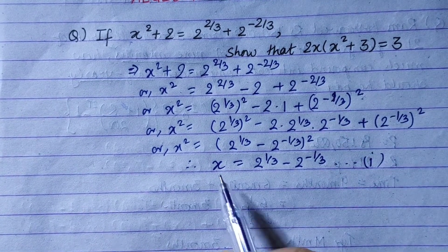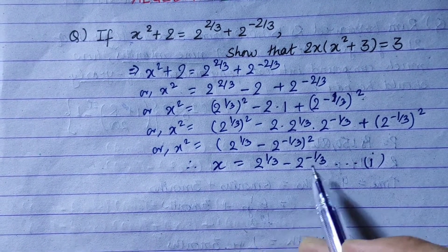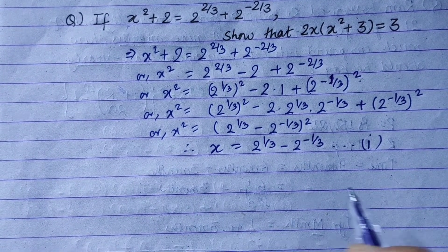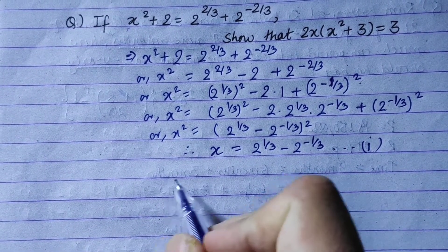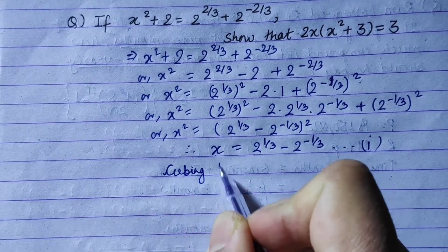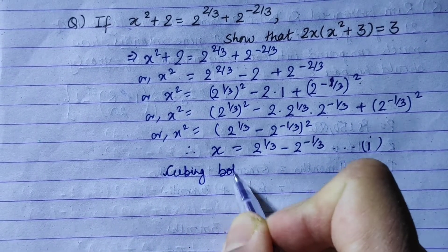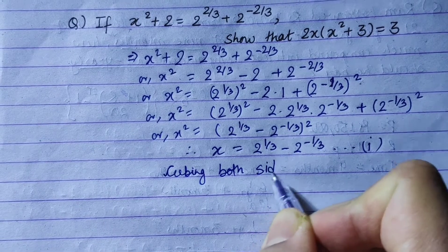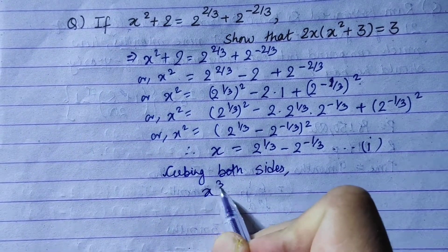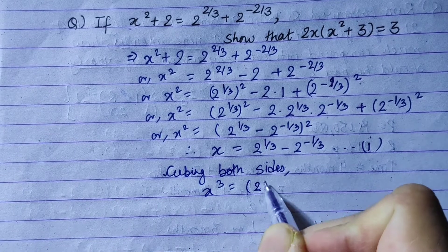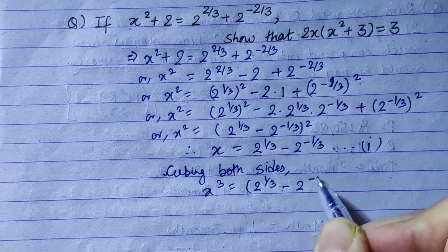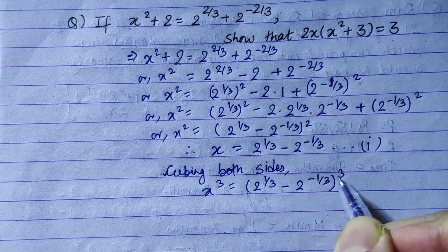So to find x cubed, we apply cubing to both sides. Cubing both sides of the equation x equals 2 to the power 1/3 minus 2 to the power minus 1/3 gives us x cubed equal to 2 to the power 1/3 minus 2 to the power minus 1/3, whole cube.